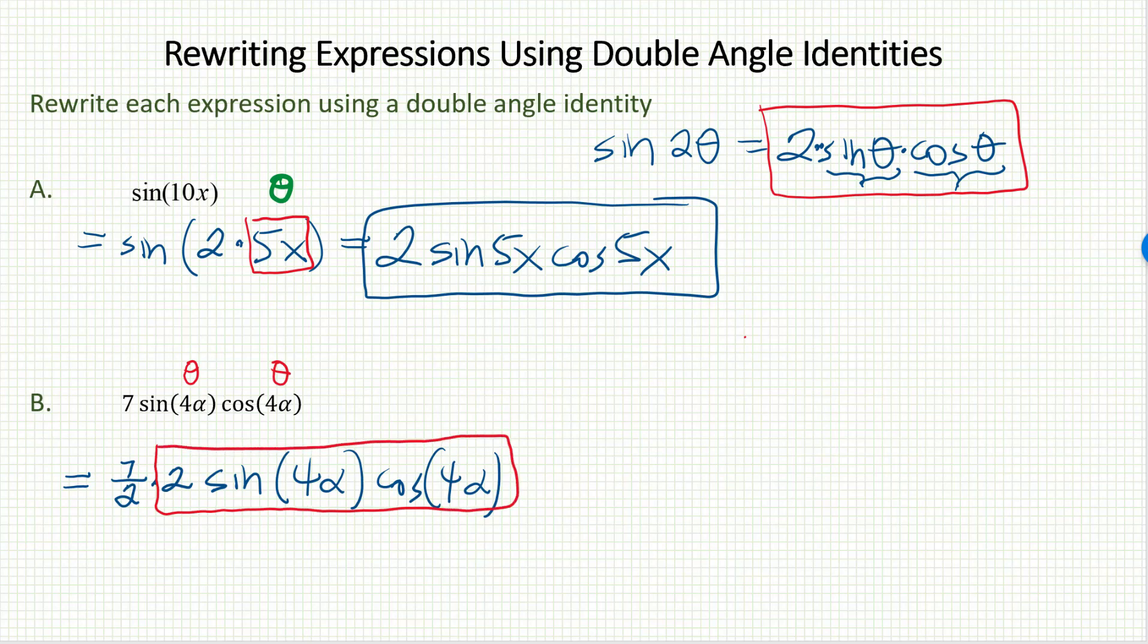That means I can rewrite this thing by switching to the left side of the double angle identity. I would have that 7 halves in the front. I don't have any way to get rid of that. And then the red box is going to get replaced with this. It's the sine and then in here 2 times as much as the θ.